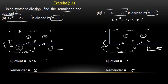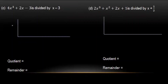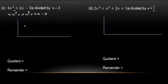We will have minus 2x minus 2, then 4x minus 2, then 4x minus 2 plus 2x minus 3, then x minus 3, and 5x minus 2.